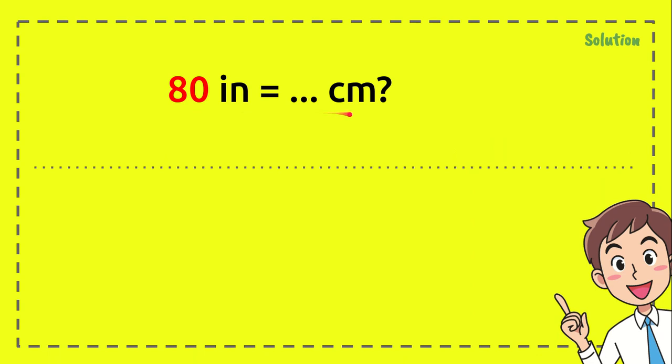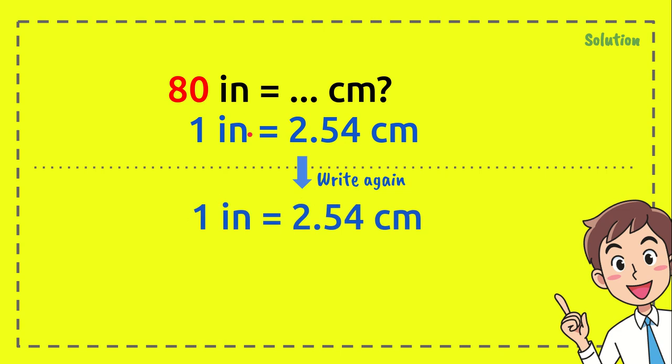First, just write the question. I give that number a red color. And after that, you need to write the formula. And in the next steps, we need to write again the formula and put from there to here.